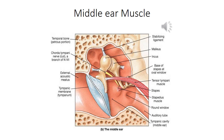The stapedius muscle is a small skeletal muscle supplied by the facial nerve. In response to loud noise, it contracts and pulls the footplate of the stapes outward from the oval window, thereby dampening the vibration transmitted to the inner ear. Paralysis of the facial nerve causes paralysis of the stapedius muscle, making the patient abnormally sensitive to loud noises — a condition known as hyperacusis.